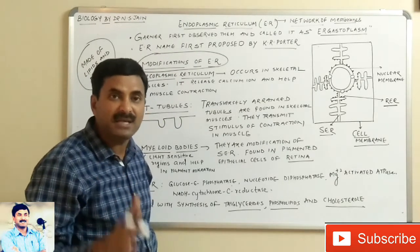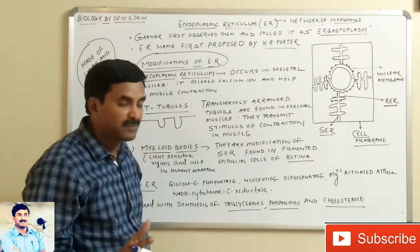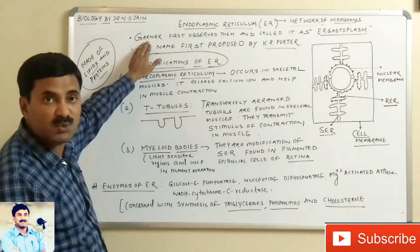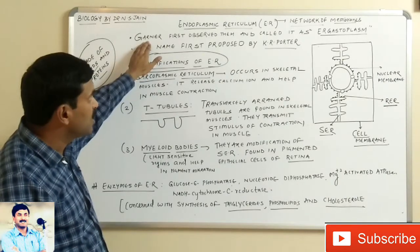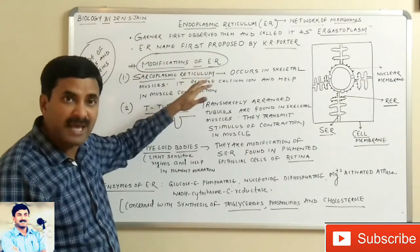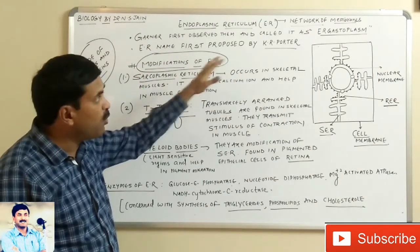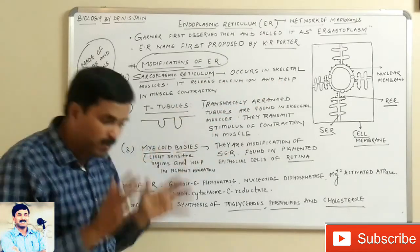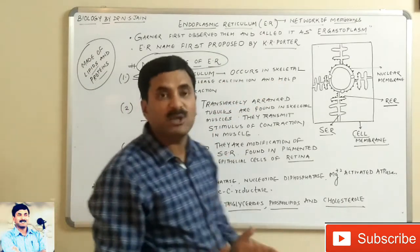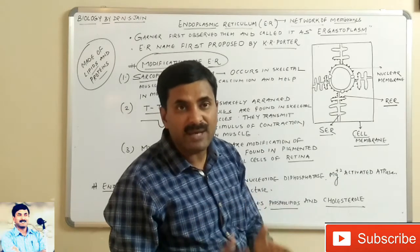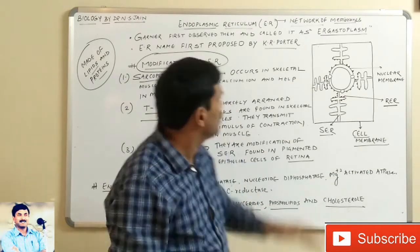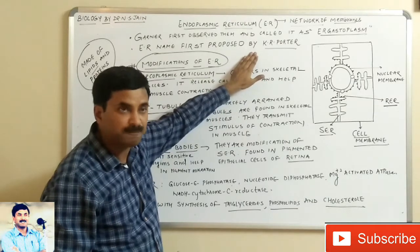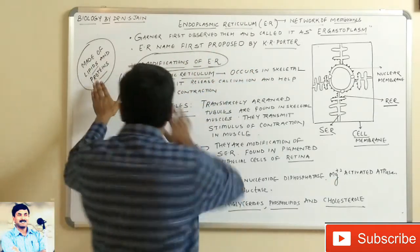Though the endoplasmic reticulum is a feature of the eukaryotic cell, it is not found in mammalian RBCs, and in prokaryotes it is totally absent. A scientist named Garnier first observed them and called them 'ergastoplasm,' but now they are called endoplasmic reticulum.